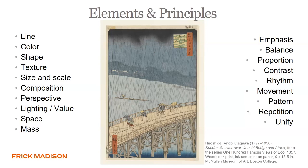Looking at the Sudden Shower over Ohashi Bridge in Atake by Hiroshige, let's examine the elements of art. Consider line: is it directional, guiding the eye around the composition? Is it implied, continuous or dotted, curvilinear or straight? In terms of color, is it monochromatic? Is there a limited palette? Are the colors complementary — on opposite sides of the color wheel — or analogous — next to each other on the color wheel?